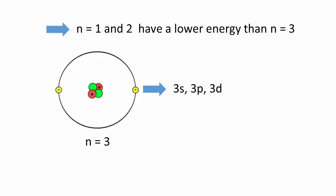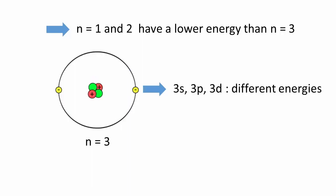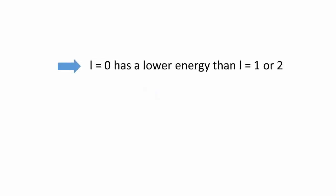However, in systems with more than one electron, these orbitals are no longer degenerate. For a given principal quantum number, the lower the azimuthal quantum number, the lower the energy. Therefore, the 3s orbital is lower than the 3p orbital, which in turn are lower than the 3d orbitals.